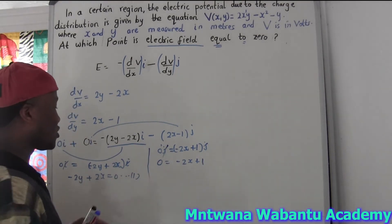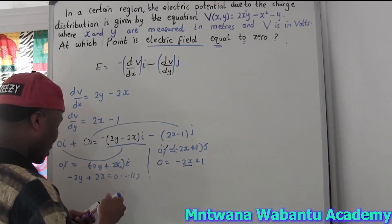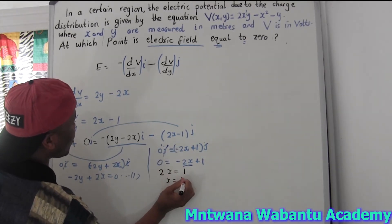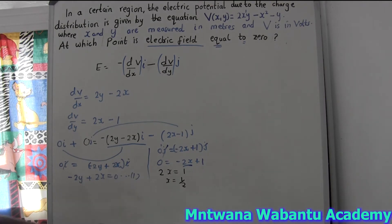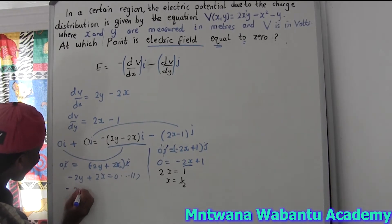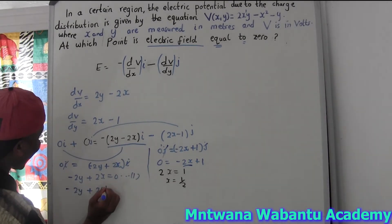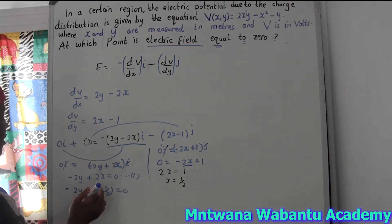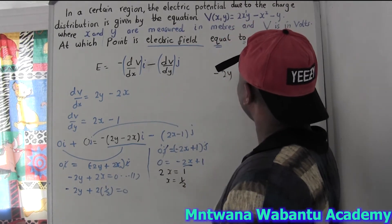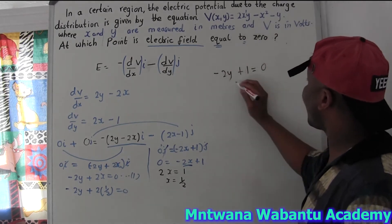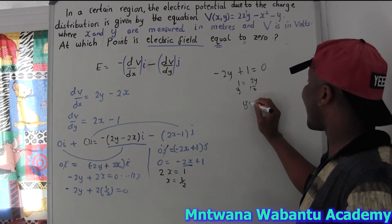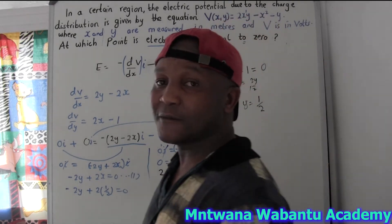From 0 = -2x + 1, we get 2x = 1, so x = 1/2. Now substitute x = 1/2 back into equation one: 2y + 2(1/2) = 0, which gives 2y + 1 = 0, so 2y = -1, and y = -1/2.